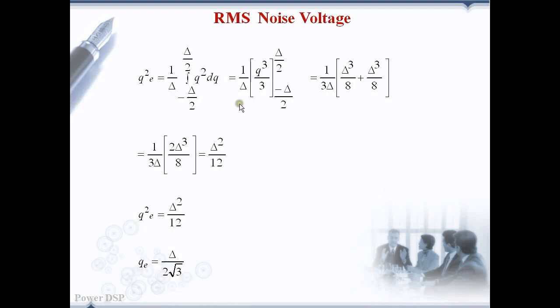After integration we get q to the power of 3 divided by 3. Then we apply the limits minus del by 2 to plus del by 2. We can further simplify it and finally we get del square by 12 which is nothing but the noise power.